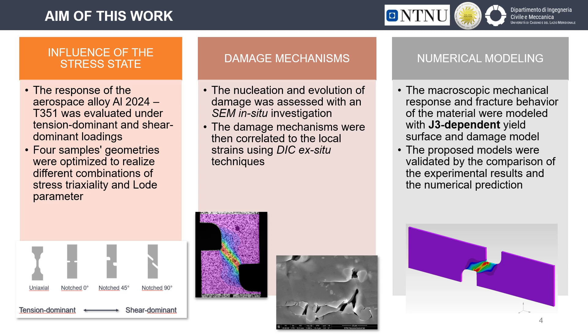The aim of this work is to evaluate the fracture response of the aluminum alloy 2024, which is well known for its shear sensitivity. To do so, we optimized the geometry of four different samples which realize different combinations of stress triaxiality and the Lode parameter, spanning from tension-dominant to shear-dominant loading conditions. We also looked closely into the damage mechanisms of this alloy with SEM in-situ investigation, and correlated experimental results to the evolution of local strain using DIC techniques. Finally, we proposed and validated a J3-dependent material model able to reproduce the behavior of this alloy under different testing conditions.